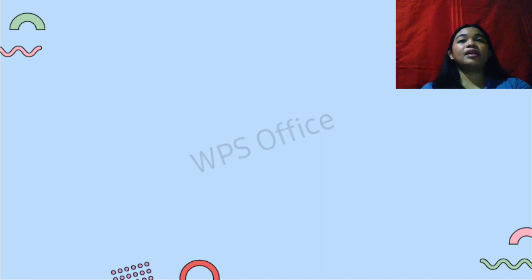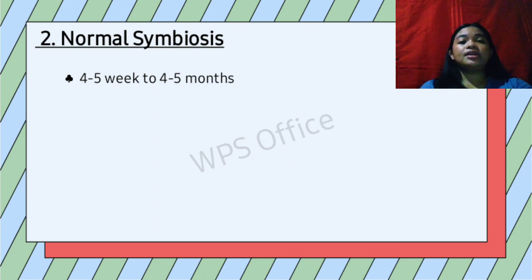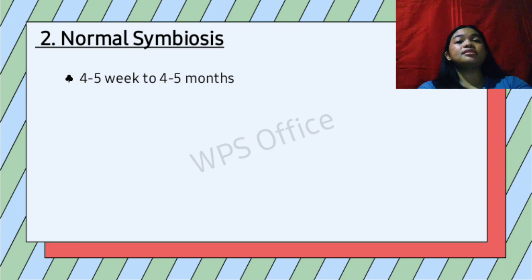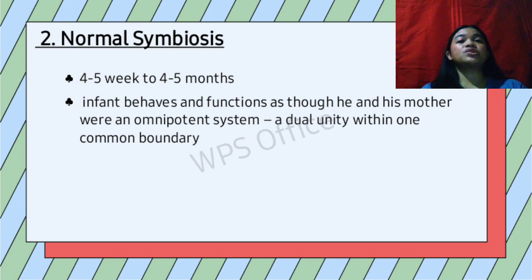The next stage is normal symbiosis. This lasts from 4 to 5 weeks to 4 to 5 months. As a newborn becomes aware of their inability to meet their own needs, they begin to identify their primary caregiver — their mother — and seek a symbiotic connection with her. The infant behaves as though he or she and the mother were an omnipotent system — a dual unity within one common boundary, as one unit.